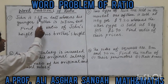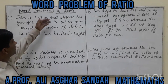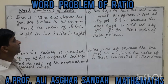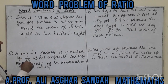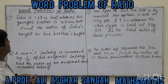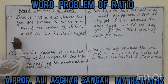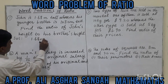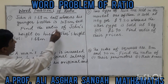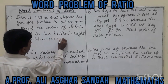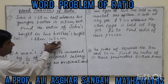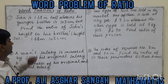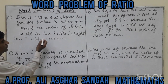John is 1.68 meters tall and his brother is 105 centimeters tall. We need to find the ratio of John's height to his brother's height. For the solution, the units must be the same — one is in meters and the other is in centimeters, so we need to convert them to the same unit.